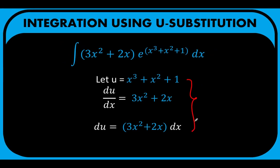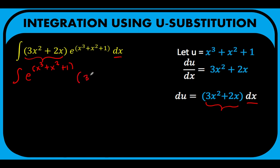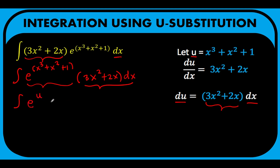With this substitution, let's proceed to solving. Notice that our du here is (3x squared plus 2x) dx. We have the factor 3x squared plus 2x and the dx here. Using the commutative property of multiplication to rearrange the factors, we arrive at the integral of e raised to (x cubed plus x squared plus 1) times (3x squared plus 2x) dx. Notice that this part is our du, and the other factor is e raised to u, since u is x cubed plus x squared plus 1. Therefore, we can rewrite this as the integral of e raised to u du.